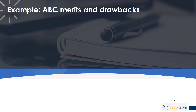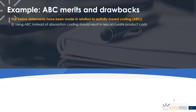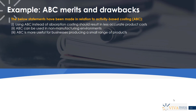So let's take a look at an example which will test whether we truly understand the merits and drawbacks of activity-based costing. We've got some statements made in relation to ABC, and we need to determine whether they are true or false. Statement one: using ABC instead of absorption costing should result in less accurate product costs. Statement two: activity-based costing can be used in non-manufacturing environments. Statement three: ABC is more useful for businesses producing a small range of products. Statement four: ABC is more useful when overheads are large in proportion to direct costs.